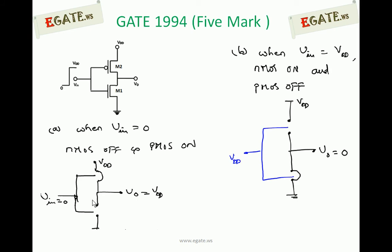When V_input equals VDD, NMOS will be in the on condition and PMOS will be in the off condition. PMOS acts as an open circuit and NMOS acts as a short circuit. The output node connects to ground through NMOS, so the output equals 0 volts. Logic 1 input gives logic 0 output, and logic 0 input gives logic 1 output.